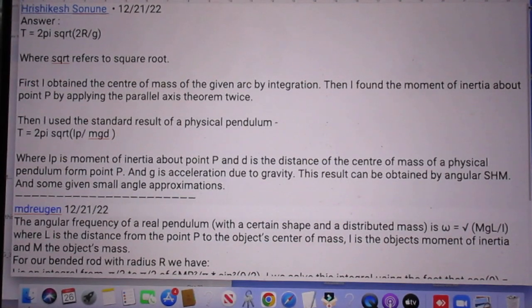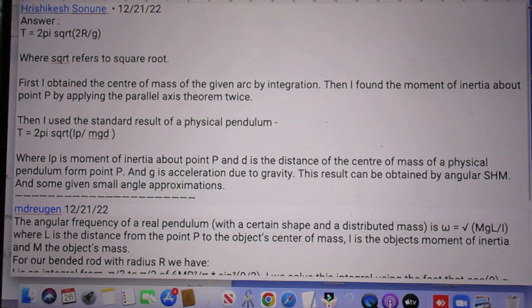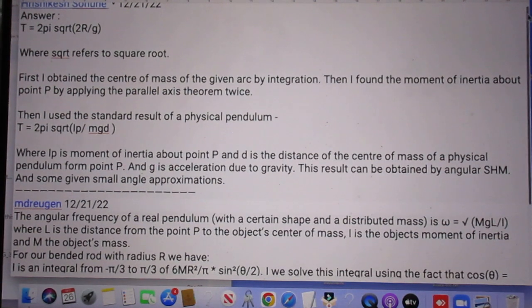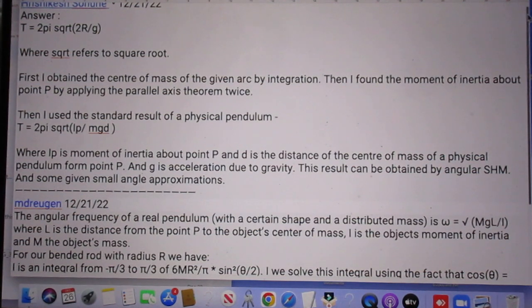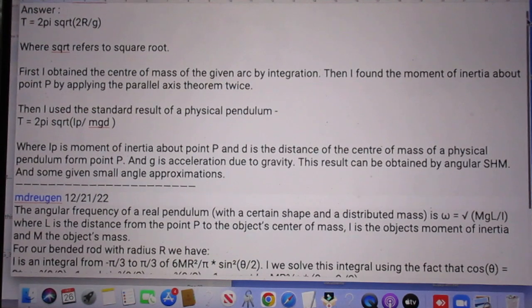This is the answer by G., I hope I pronounced that correctly. So Nuni. I received his solution on December 21. And what you see here is verbatim his text. I made no changes. He starts by saying T is 2 pi times the square root of 2R over G, which is correct. And then he writes where the square root refers to square root.